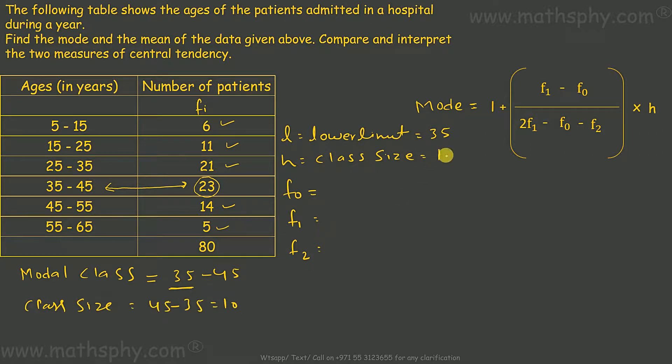Now F₀, F₁, F₂. F₁ means this frequency which is happening most of the time - this is F₁ which is 23. F₀ is immediately previous to this, which is 21. Immediately after 23 we have 14, so F₂ would be 14. F₁ is highest frequency, F₀ immediately before that, F₂ immediately after that. Now it's simple plug and play.